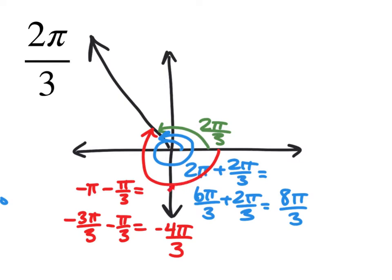Going the negative direction, we pass negative π/2, then negative π, then a little more — specifically π/3 more. So we get negative π minus π/3, which with a common denominator is negative 4π/3. That's a coterminal angle with 2π/3 — they end at the same spot.